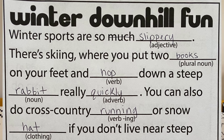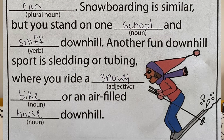The story is called 'Winter Downhill Fun.' Winter sports are so slippery. There's skiing, where you put two books on your feet and hop down a steep rabbit really quickly. You can also do cross-country running or snow hat if you don't live near steep cars. Snowboarding is similar, but you stand on one school and sniff downhill. Another fun downhill sport is sledding or tubing, where you ride a snowy bike or an air-filled house downhill. Now, I don't think any of those winter sports sound quite right, but it was pretty fun to play! I'll go ahead and share it with all my friends that helped me out. If you want to play Mad Libs with your own family, I'll leave a link in the description to where you can download PDFs of a bunch of fun winter or holiday-themed Mad Libs.